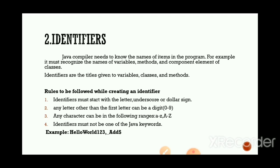In our Java programming we have so many names — variables, classes, and methods. How can you find out what is a variable, what is a class, and what is a method? By giving names, right. So identifiers are the names given to program elements.